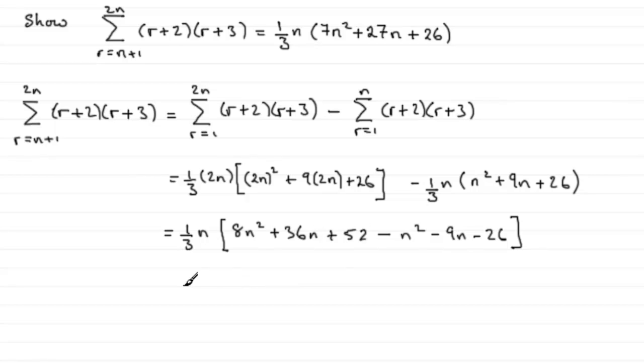And so if we group these terms together, we've got our 1/3·n out the front here, and we should find we get 8n² minus n² is 7n². Group the n terms together, you've got 27n. And then 52 minus 26 is plus 26. And so there you go, proves the result.